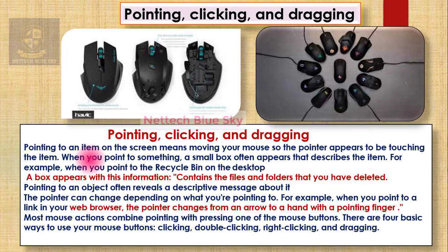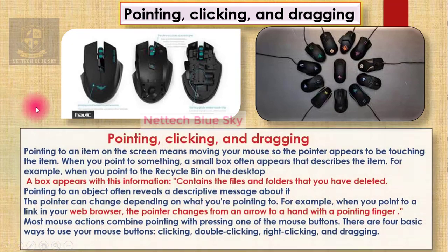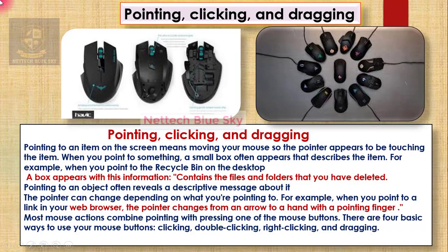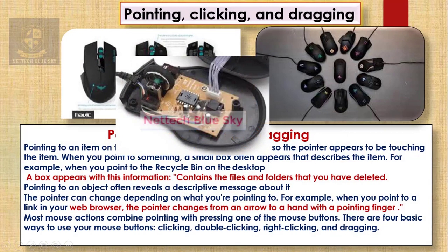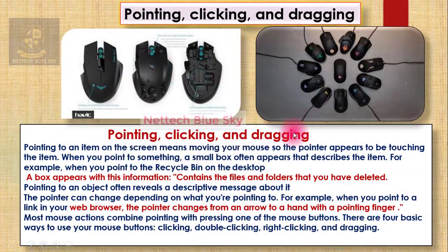So, pointing: pointing to an item on the screen means moving your mouse so the pointer appears to be touching the item. Your mouse pointer is really important because you use it to control your screen, control your computer, move anything, and click on anything — touching items on your digital system using the mouse.